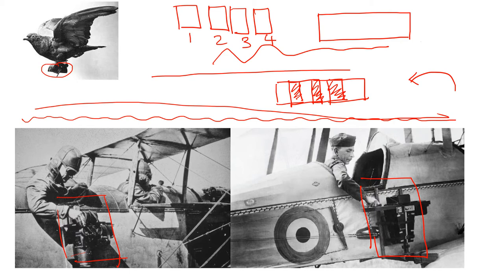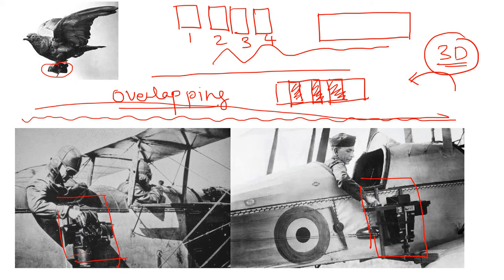By overlapping such areas we get more information and images can be converted to 3D. With the present drone scenario we are doing the same thing — it's called the overlapping concept. To get proper information or to get 3D out of these pictures, along with the X and Y components (latitude and longitude) we also get the Z component, which is the height or elevation. This height helps to create 3D models, and the 3D gives more detail in studies. This is now taking a boom in present times.